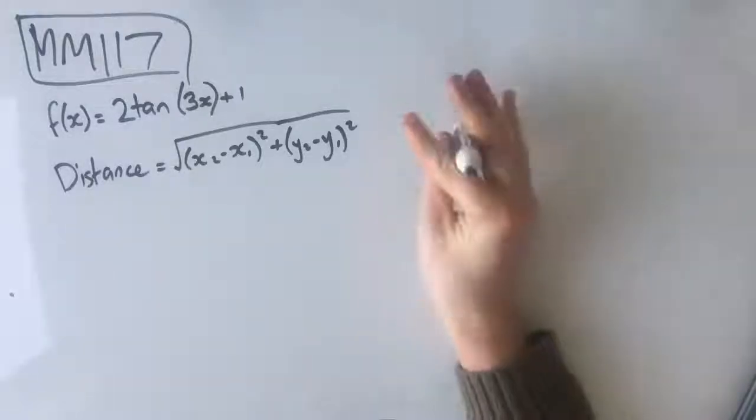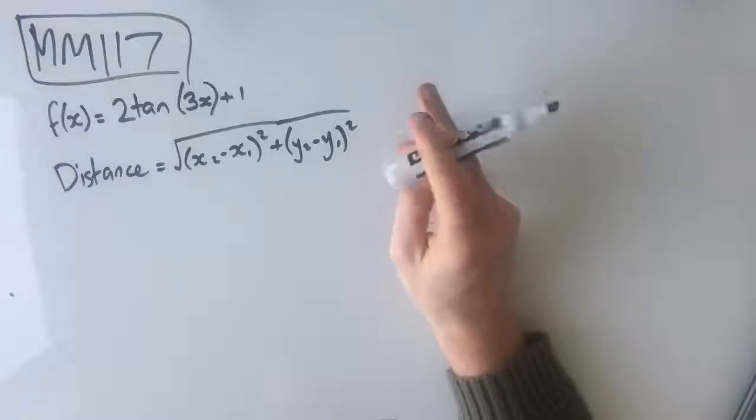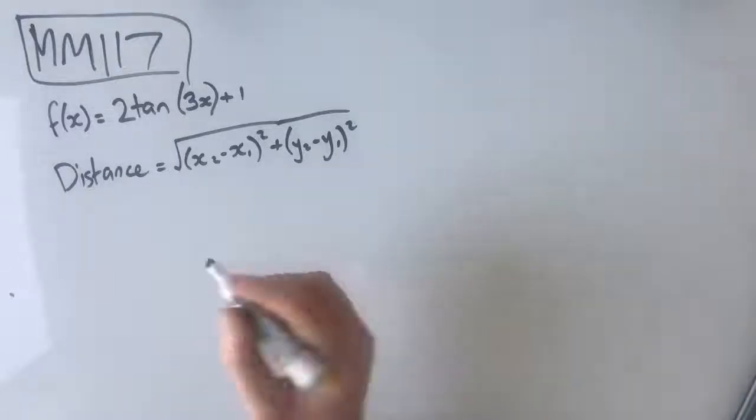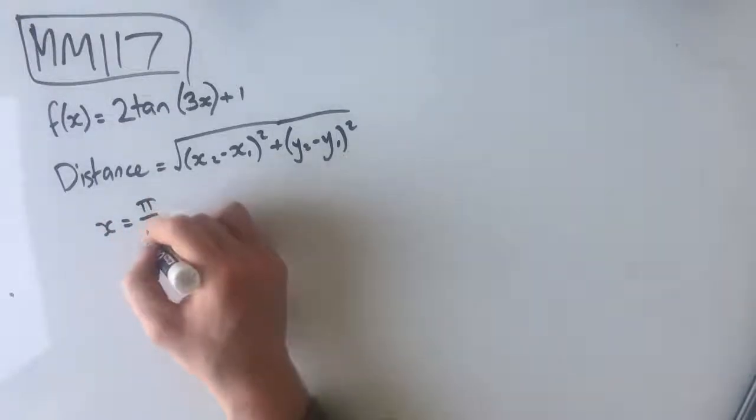Hey guys, this is question MM117 of the Maths Methods Fortify Study Guide. Today we've got a function f of x equals 2 tan of 3x plus 1. We're trying to find the distance between the points where x equals π/12 and x equals π/3.